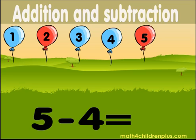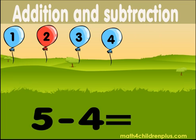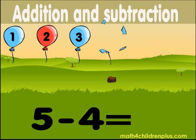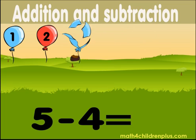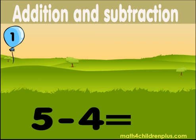What is 5 minus 4? 1, 2, 3, 4. 1. 5 minus 4 equals 1.